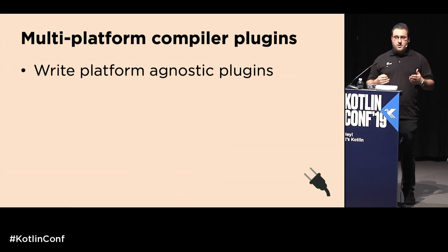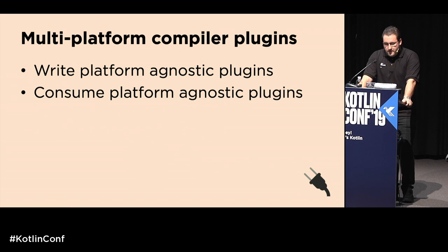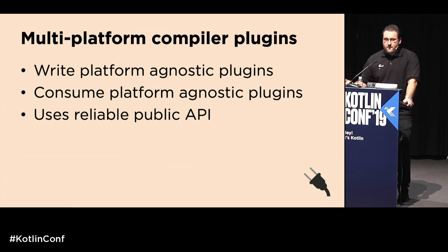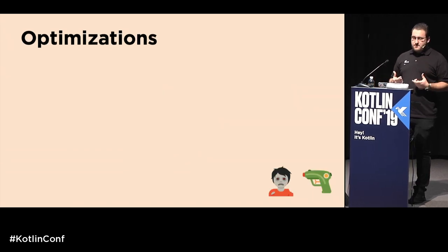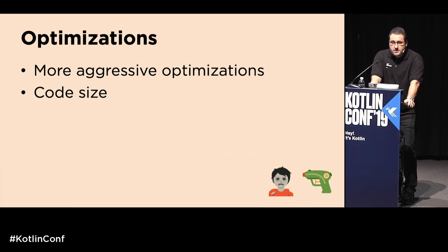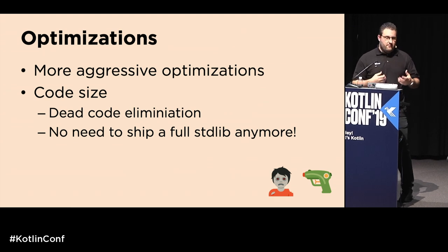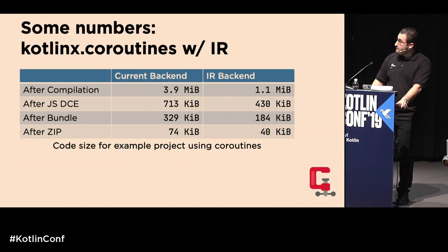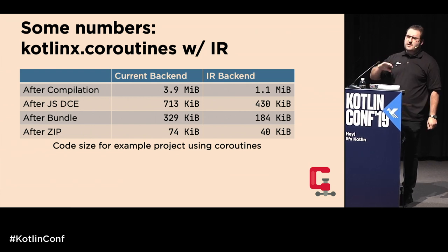We also plan a well-structured API that makes it possible for plugin authors to rely on this functionality more robustly. JavaScript-specifically, the new backend allows more aggressive optimizations — especially for code size. With the old backend you were sometimes forced to ship a full standard library. Dead code elimination with the new backend changes this significantly. Looking at numbers for an example project using coroutines and kotlinx.html, the IR backend produces much smaller code at every optimization stage.